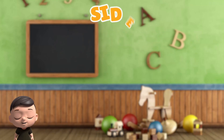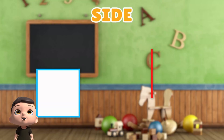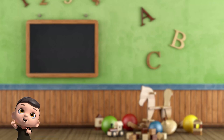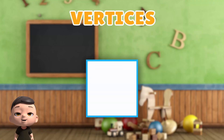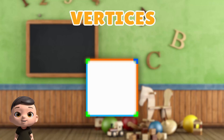Let's learn what a side is. A side is a straight line that makes the shape. Shapes like squares and triangles have sides we can count. Now let's see what vertices are. Vertices are the corners of a shape, where 2 sides meet and make a point.